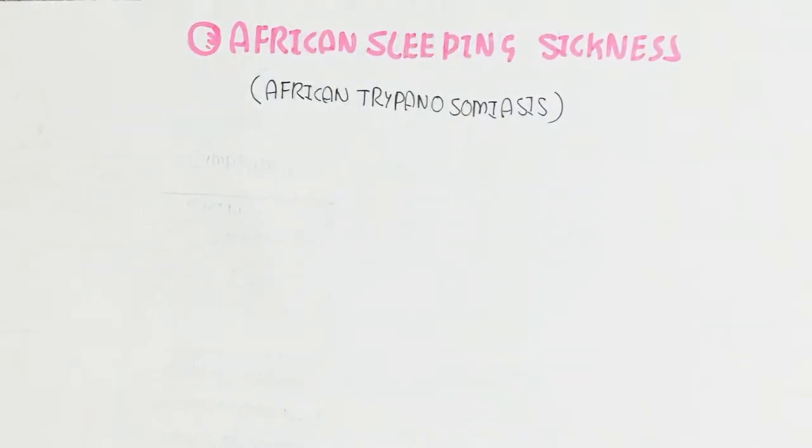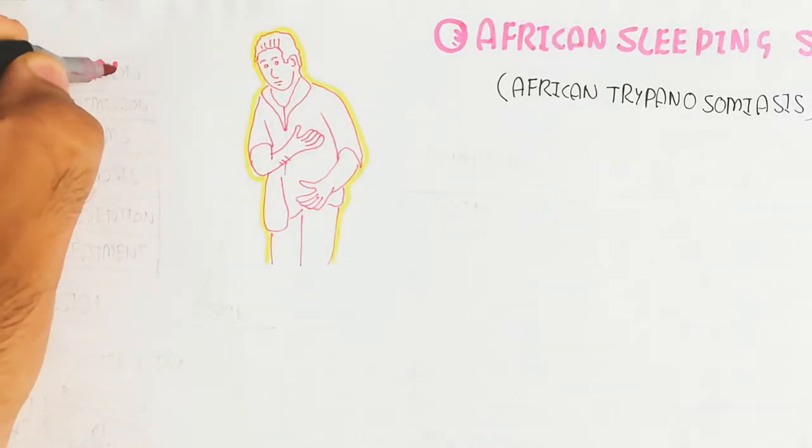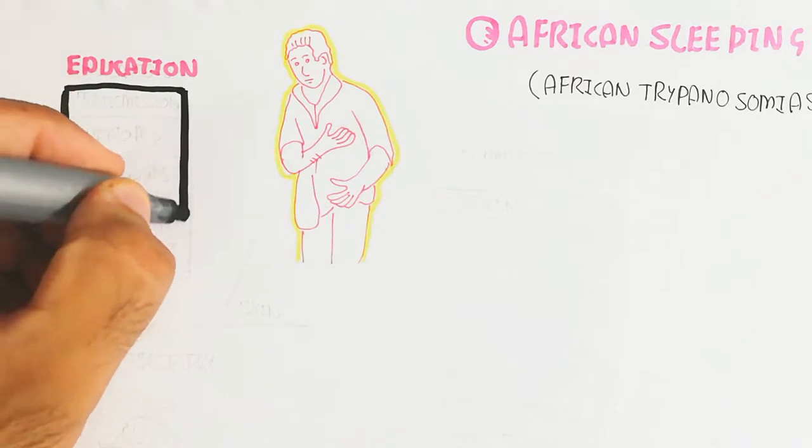African Trypanosomiasis is caused by the tsetse fly bite. After biting the person, there are several symptoms and signs that appear.